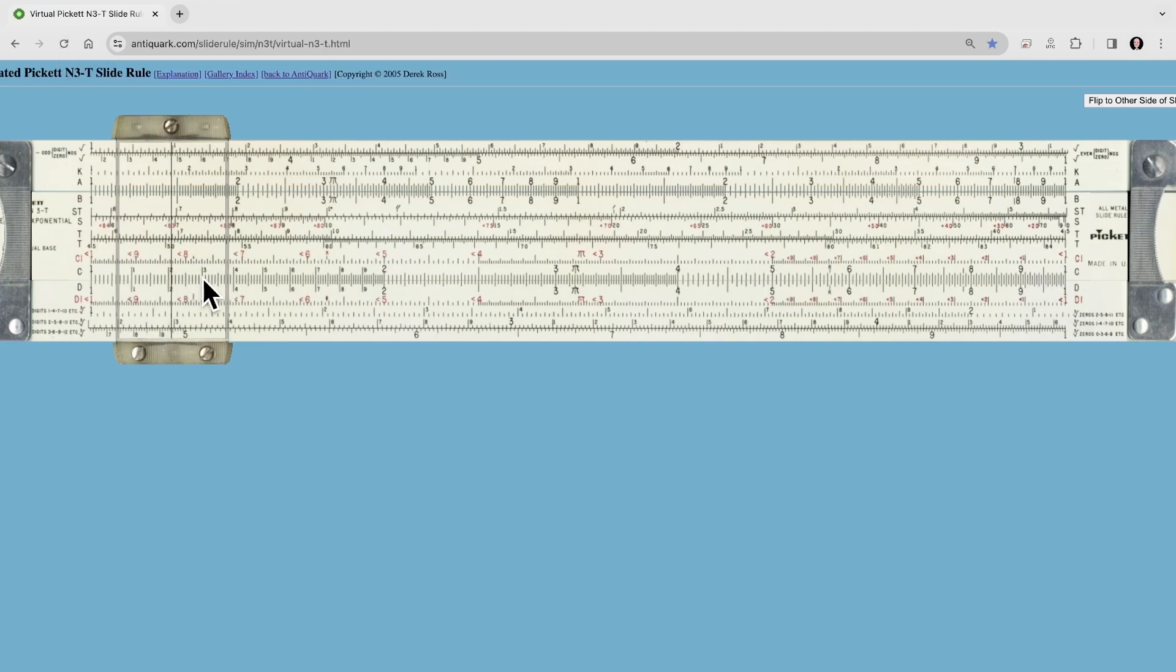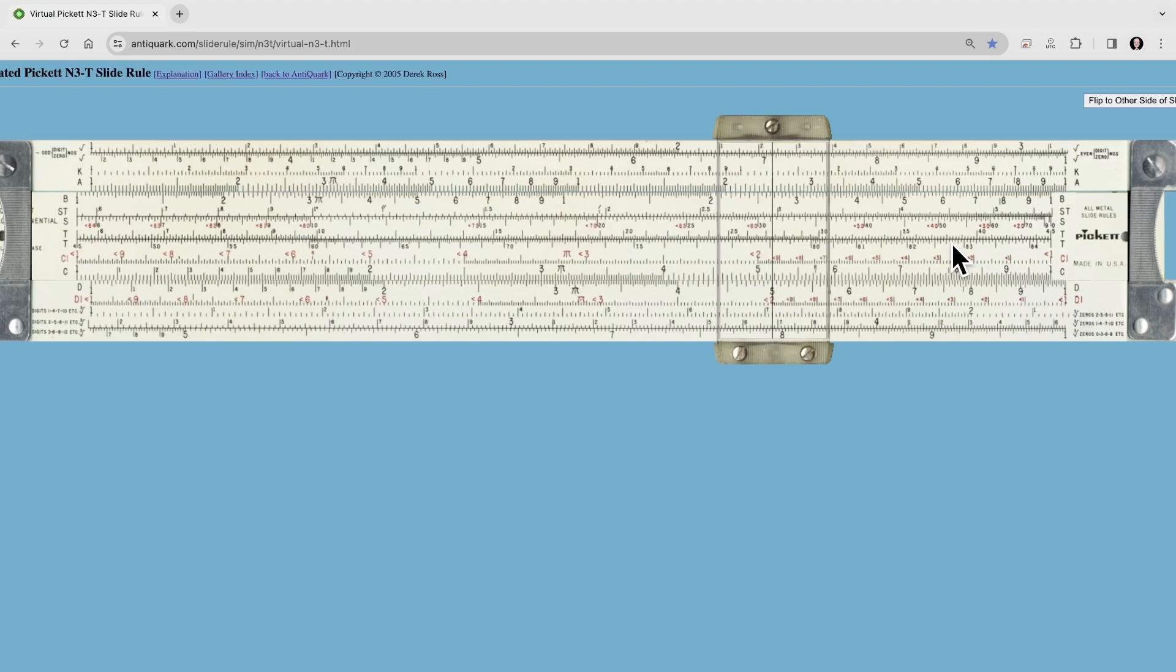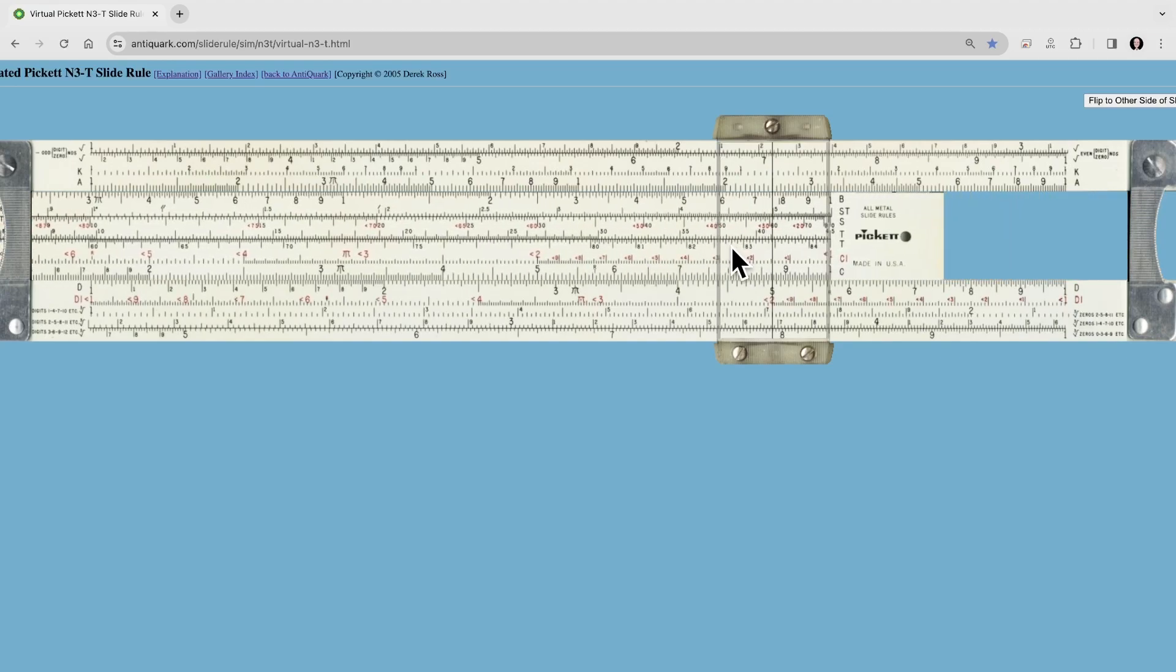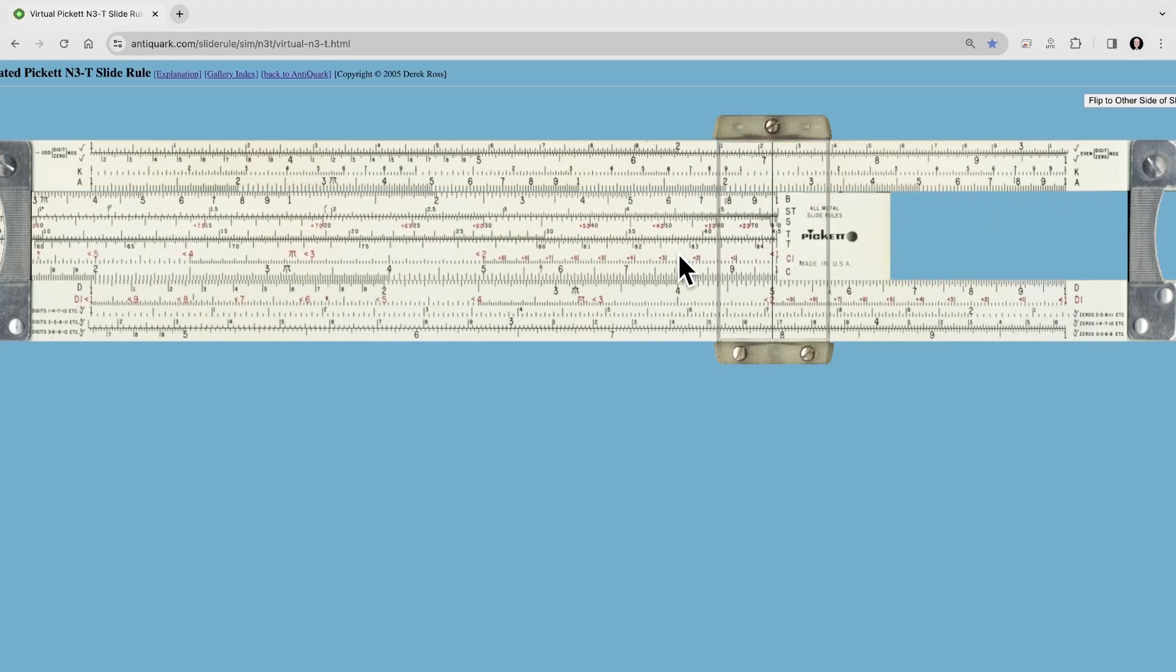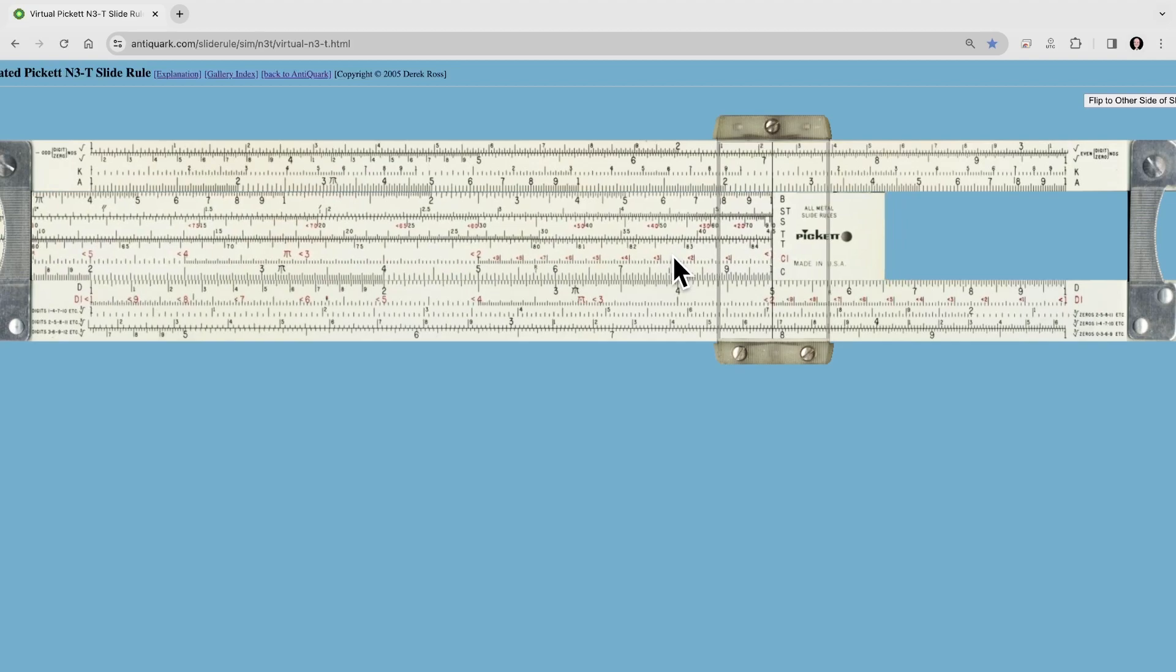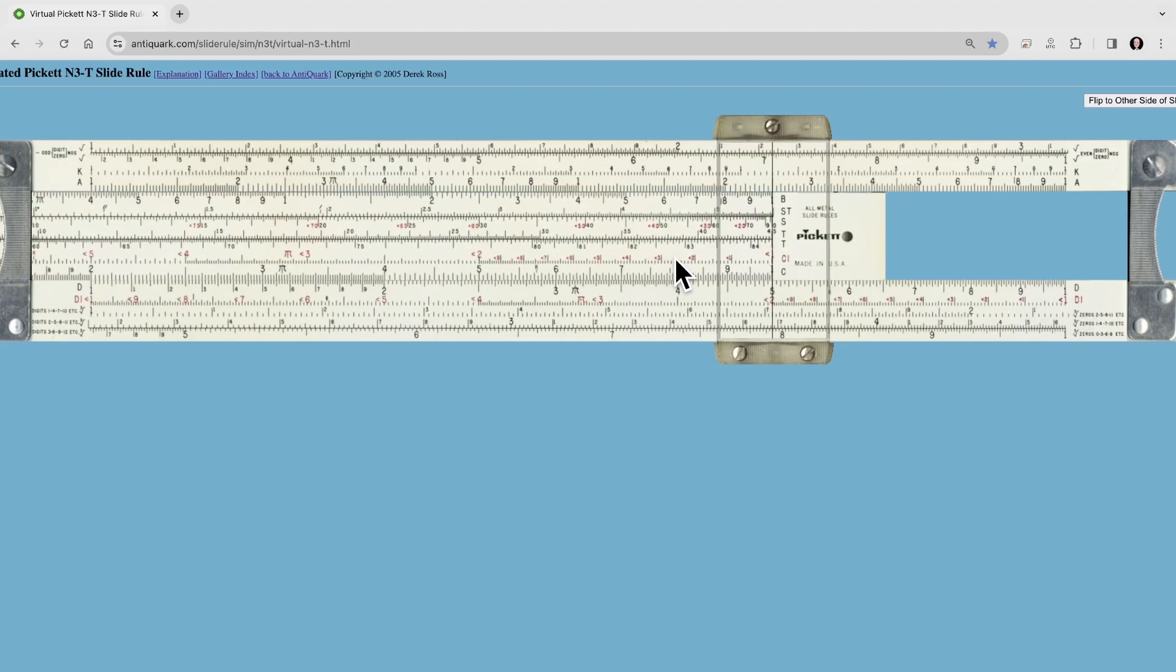So our longest side, our hypotenuse, is 5. So let's come out here and put the hairline directly over 5. And then we're going to put the sine of 90 degrees, because that's the hypotenuse and it's opposite the 90 degree angle, directly over it. And the sine of 90 degrees is 1.